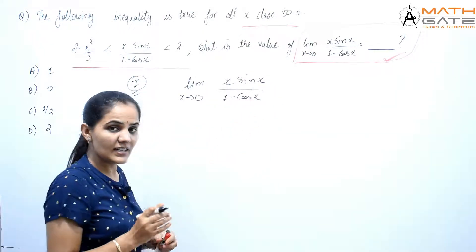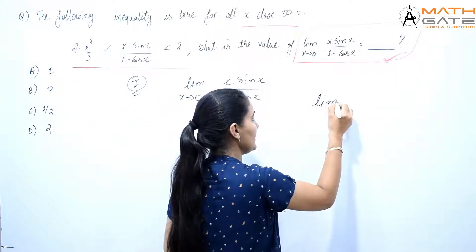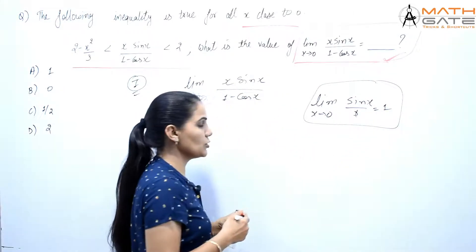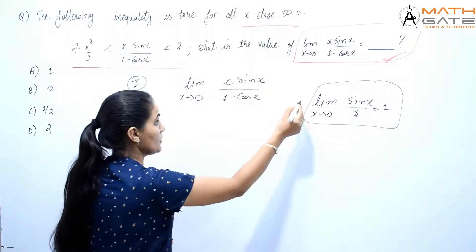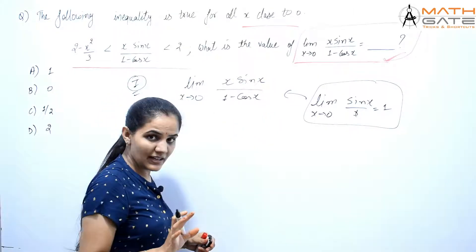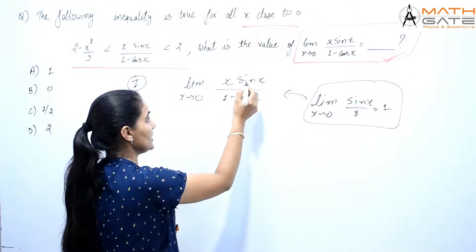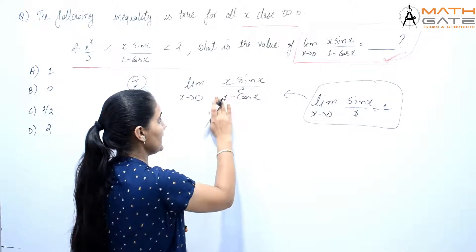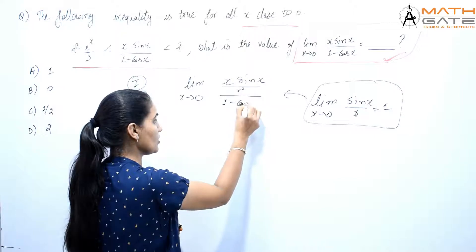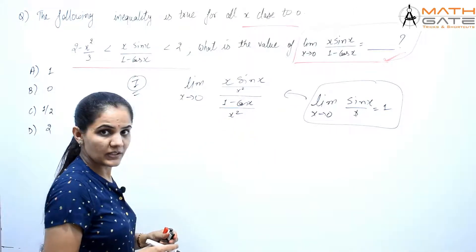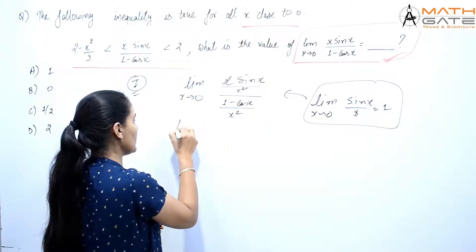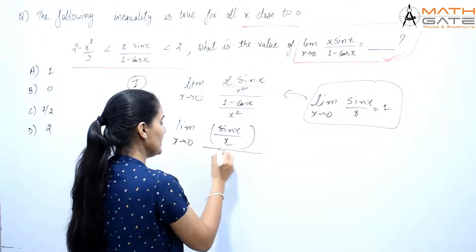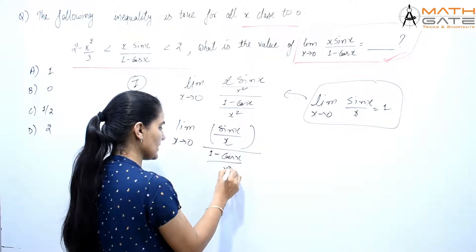We know the formula: limit x tends to 0 of sin(x)/x is equal to 1. So if we have something like this — limit x tends to 0 of sin(x)/x = 1 — we need to arrange sin(x) to be divided by x. So what we do is divide numerator and denominator by x². After dividing by x², we get x·sin(x)/x² which simplifies, and (1 - cos(x))/x² in the denominator.